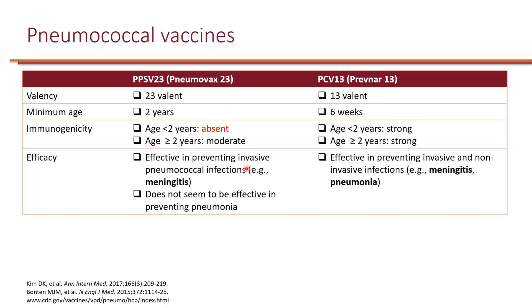Let's compare efficacy. The pneumococcal polysaccharide vaccine is effective in preventing invasive pneumococcal infections such as meningitis, but unfortunately does not appear to be effective in preventing pneumonia — none of the studies evaluating polysaccharide vaccines have shown efficacy for pneumonia. PCV, on the other hand, is very effective in reducing invasive infections like meningitis, but has also been shown to be effective in preventing non-invasive infections such as pneumonia.